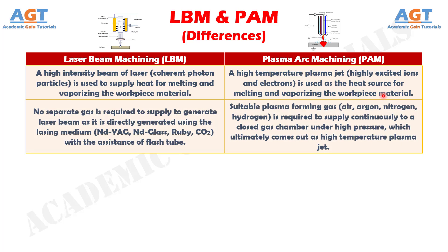Number 2: In Laser Beam Machining, no separate gas is required to generate the laser beam, as it is directly generated using the lasing medium — Neodymium-doped YAG or Neodymium-doped glass — with the assistance of a flash tube. Whereas in Plasma Arc Machining, a suitable plasma forming gas — air, argon, nitrogen, or hydrogen — is required to be supplied continuously to a closed gas chamber under high pressure, which ultimately comes out as a high temperature plasma jet.